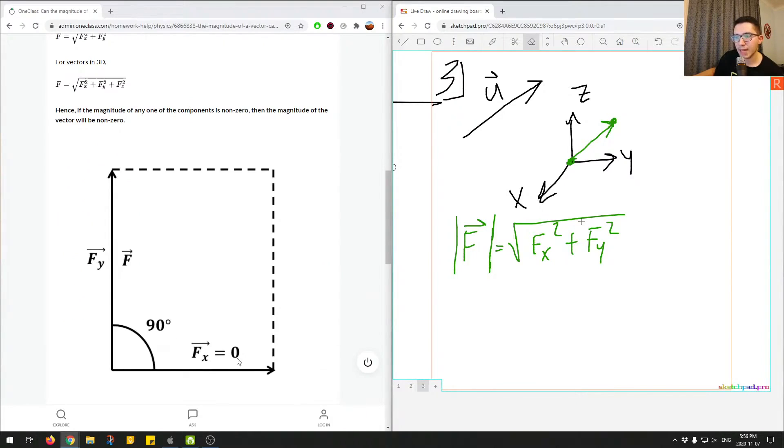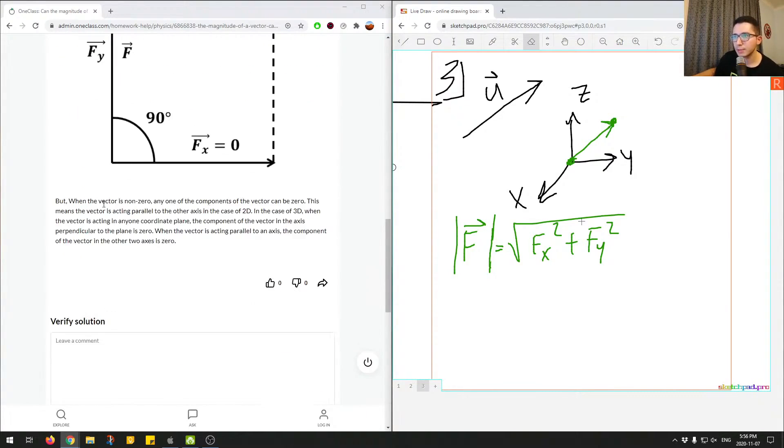So even if F of an axis is zero, we still have F of y, and our magnitude is just in the y direction, but we still have a magnitude.